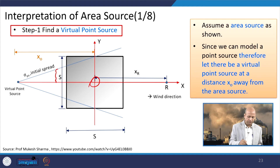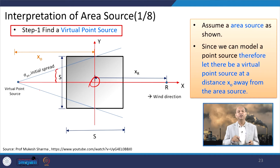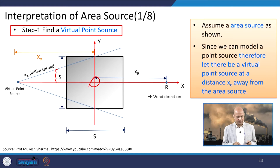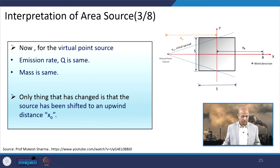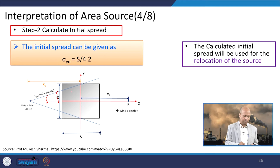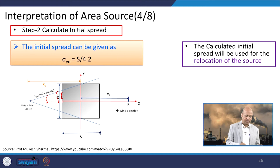The total distance from the virtual point source to the receptor is x_0 plus x_r. Sigma_y_0 is the initial lateral spread, assumed as S/4.2, where S is the side of the square area source. From sigma_y_0 and the dispersion chart for the given atmospheric stability, we can read off the corresponding distance x_0 — the distance in the upwind direction from the area source to the virtual point.